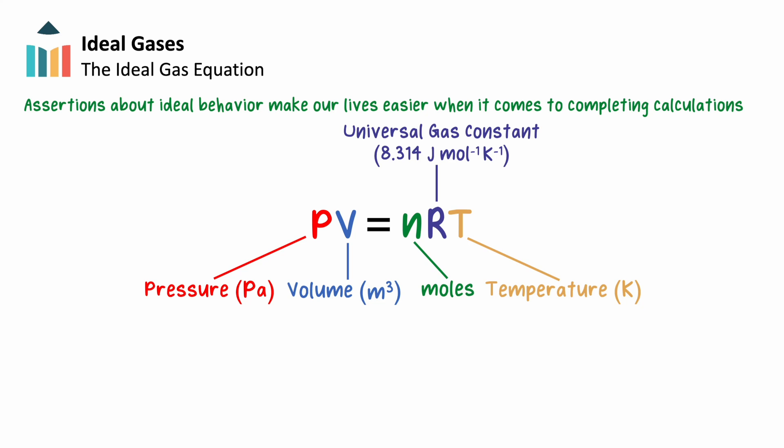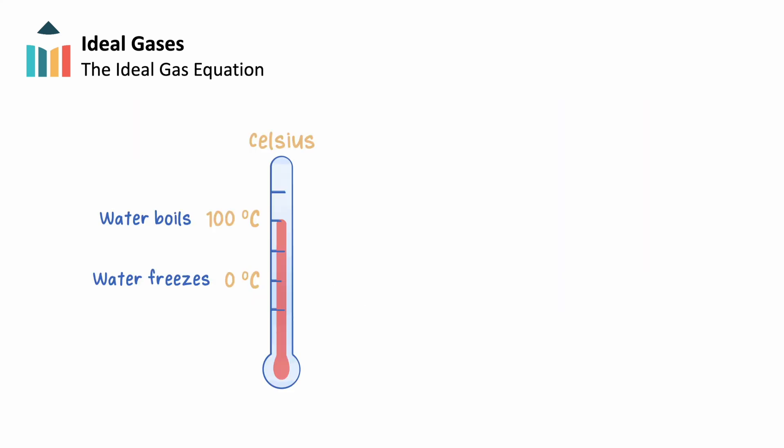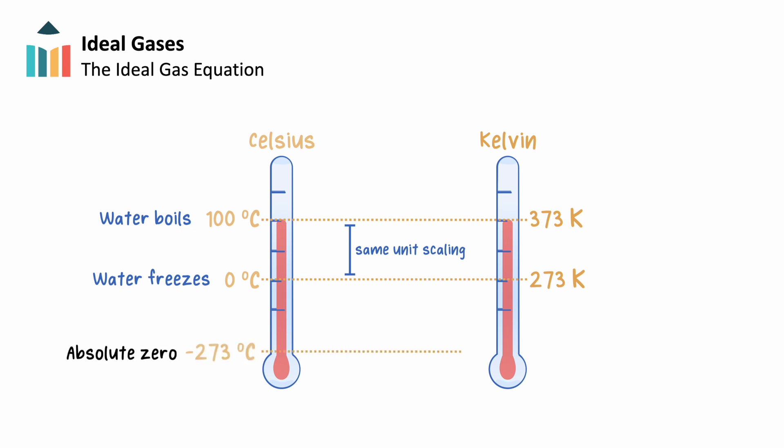If you're new to the unit Kelvin, this measurement of temperature follows the same unit scaling as Celsius, but with one large distinction. While the Celsius scale extends into the negative degrees, the Kelvin scale shifts everything down so that our temperature values start at absolute zero. Thus, to relate Kelvin and degrees Celsius, we follow this relationship: Kelvin equals degrees Celsius plus 273.15.